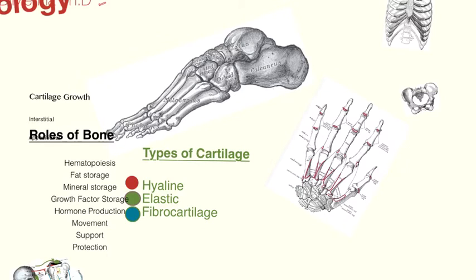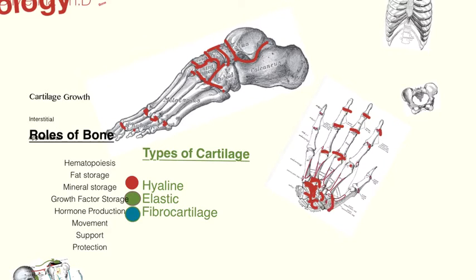Also between our phalanges, metatarsals, and carpal bones, we have hyaline cartilage found at the articular surface. It adds padding and protection so we can bend, move, and flex our fingers and toes, as well as our ankle bones and wrists. Along these surfaces, as we use our range of motion, we're not damaging all of these closely knit bones along our hands and feet.